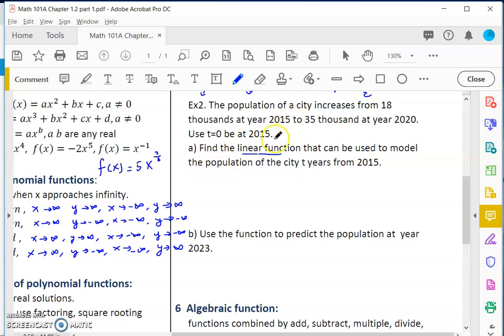We have t equals zero is 2015. So the function would be p of t equals mx plus b. b is at t equals zero, which is year 2015, and that's 18,000. What is the slope? Let's write down: 2015 is t equals zero, population is 18,000.